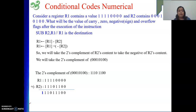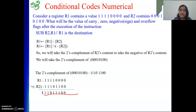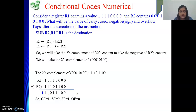Looking at the result, the carry flag will be 1 because there is a carry shown in blue. The zero flag will be 0 because the result is not zero — it has some 1s. The negative or sign flag is the value of the MSB of the result, which is 1, so the sign flag value will be 1, indicating a negative value. The overflow flag will be 0 because both inputs had sign bit 1 and the result also has sign bit 1 — no overflow occurred.